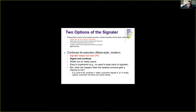The other option is signal-and-continue. Here, when a process signals a condition variable, the signaler continues execution. What happens is we look into the wait queue, pick one process, change its state to ready, and then continue execution of the signaler. When scheduling happens, since we've put one of the waiting processes into the ready state, that process gets picked and starts executing.